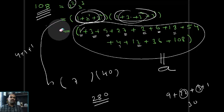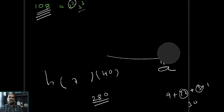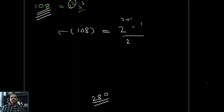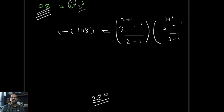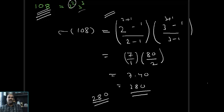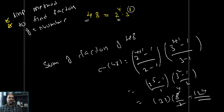For sum of factors of 108: 108 = 2^2 × 3^3, so sum = (2^(2+1) − 1)/(2 − 1) × (3^(3+1) − 1)/(3 − 1) = (2^3 − 1)/1 × (3^4 − 1)/2 = 7 × (81 − 1)/2 = 7 × 80/2 = 7 × 40 = 280. So the sum of factors of 108 equals 280. In this class I explained how to find the number of factors and sum of factors of a composite number.